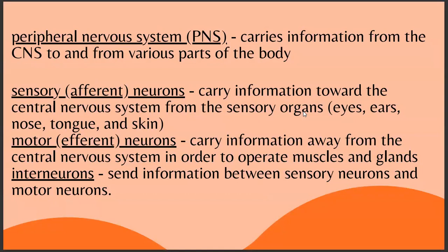The PNS includes sensory (afferent) neurons, which carry information toward the CNS from sensory organs — eyes, ears, nose, tongue, and skin. For example, seeing something sends a signal to the brain. Motor (efferent) neurons carry information away from the CNS to operate muscles and glands — telling your body to move a leg or swallow. Interneurons send information between sensory and motor neurons.